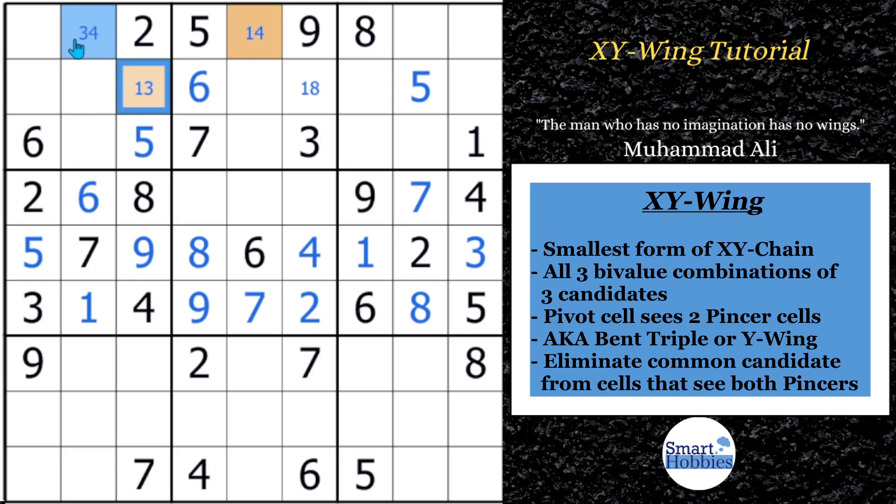The XY wing must contain all three bi-valued combinations of three candidates. So you have three candidates here, a 1 and a 3, a 1 and a 4, and a 3 and a 4. Those three candidates, 1, 3, and 4, can be in those three combinations. Next, you have to have one cell, it's called a pivot, that sees the other two cells. So this blue cell shares the house with this orange cell, and it shares the row with this orange cell. And so that's called seeing the other cells, if it shares the house.